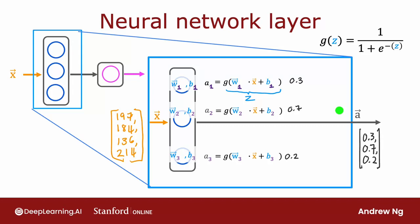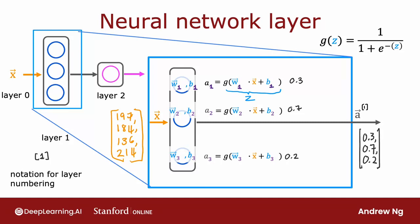This vector of three numbers becomes the vector of activation values a that is passed to the final output layer. When you build neural networks with multiple layers, it's useful to give the layers different numbers. By convention, this hidden layer is called layer one and the output layer is called layer two, and the input layer is sometimes called layer zero. To distinguish between layers, I'm going to use superscript square brackets — so a superscript in square brackets one denotes the output of layer one.